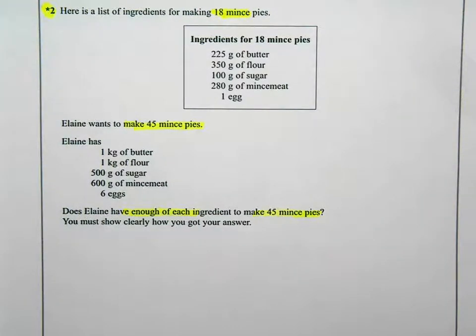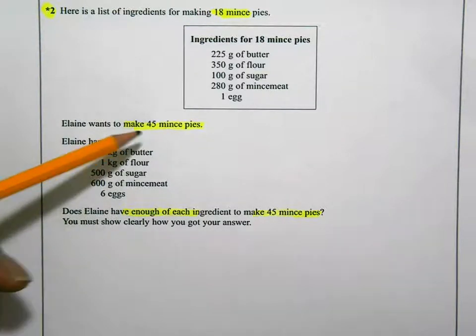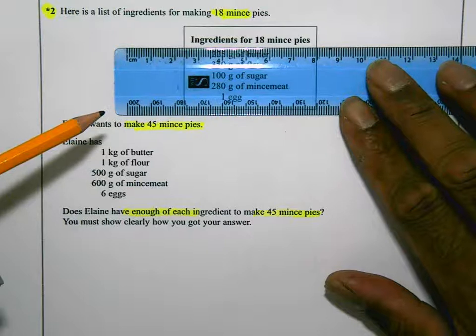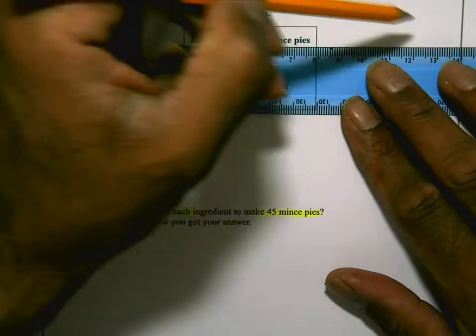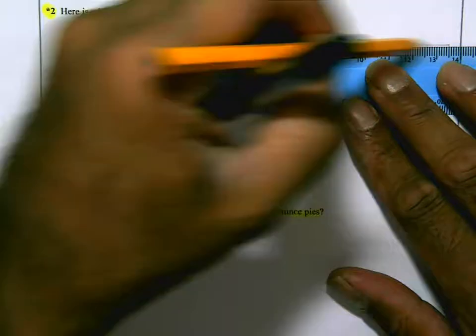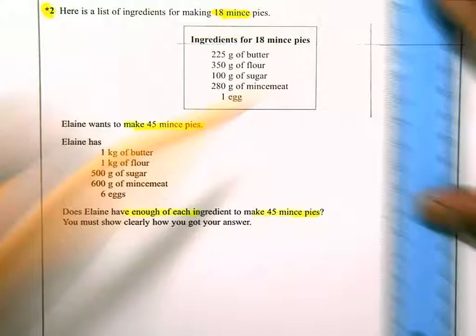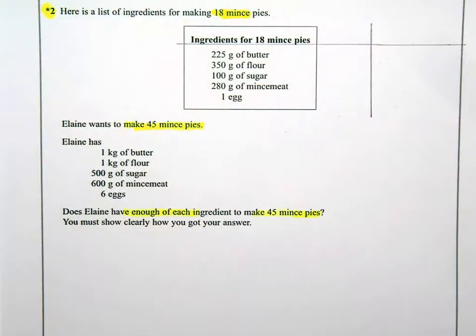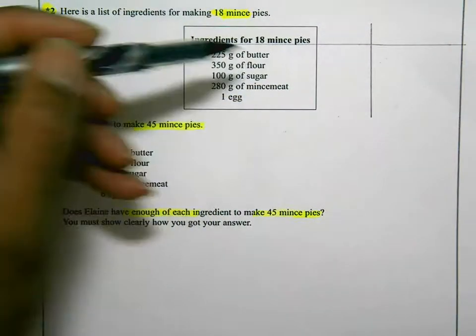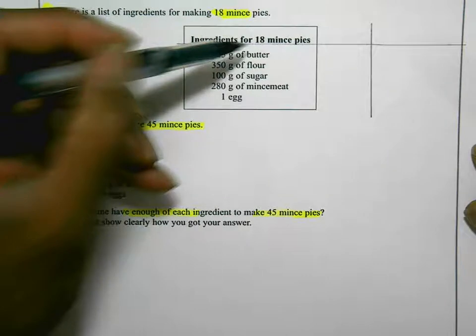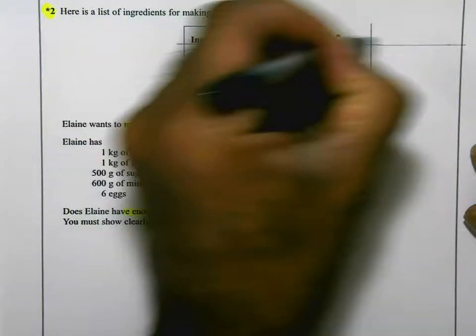Now this is a fairly standard type question over the last few years. However, they've just presented this in a slightly different way. They want us to work out how many ingredients you need for 45 mince pies. So I actually always look at how many you can make with the ingredients they've given us and what can I do with that number to create 45. So, thinking about it, 18 plus 18 plus 9, that makes 45.